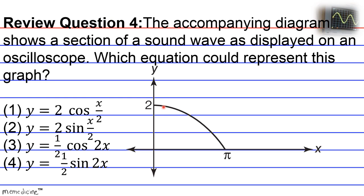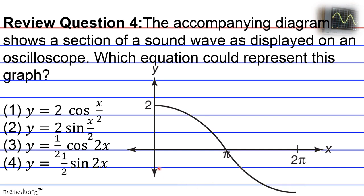The first thing I'm going to recommend is that it's helpful to extend this graph to the right. When x is equivalent to 0, the graph is going to be at its maximum. This is basically a part of a cosine wave. You should know the difference in how a cosine wave looks as opposed to a sine wave — sine waves pass through the origin unless they have a vertical shift or a phase shift.